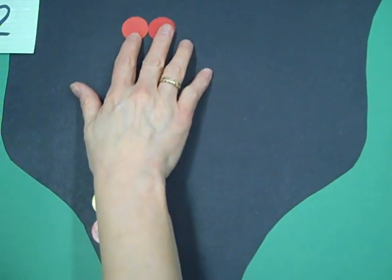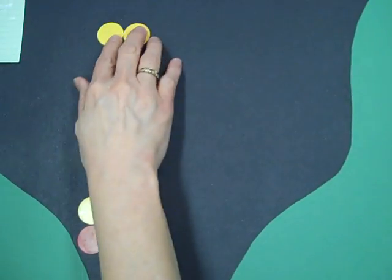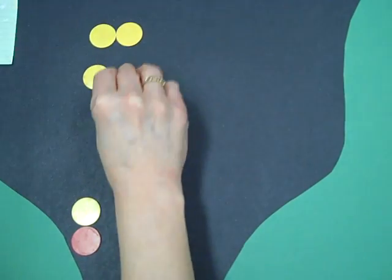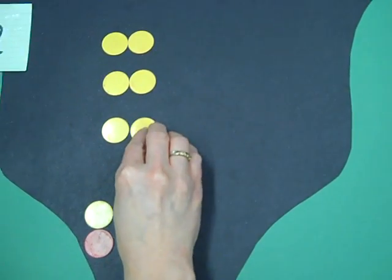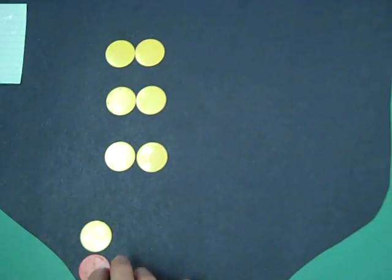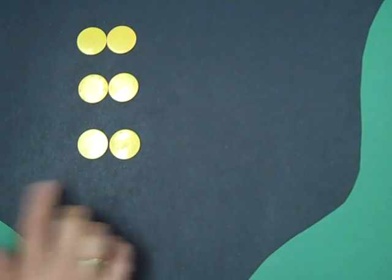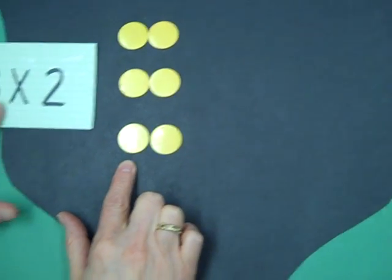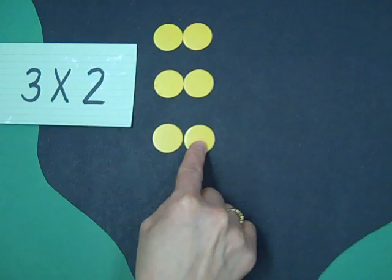I'm going to have one group of two. One group of two. Two groups of two. And three groups of two. If I happen to have a zero pair down here, those cancel each other out. My answer for this question, three times two is positive six.